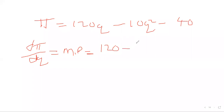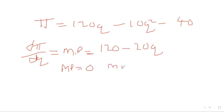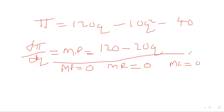Rearranging, we get 120Q minus 10Q squared minus 40. To maximize profit, we find the marginal profit — anything differentiated and equated to zero is optimizing. Marginal profit is when we differentiate profit against quantity: 120Q becomes 120, 10Q squared becomes 20Q, and 40 drops out as a constant.